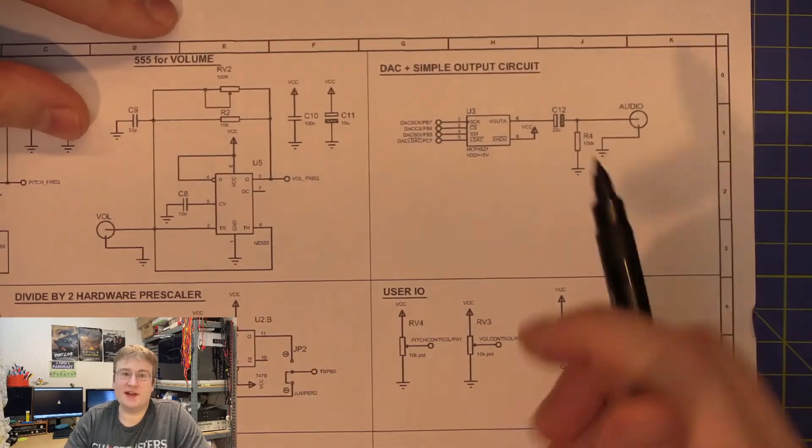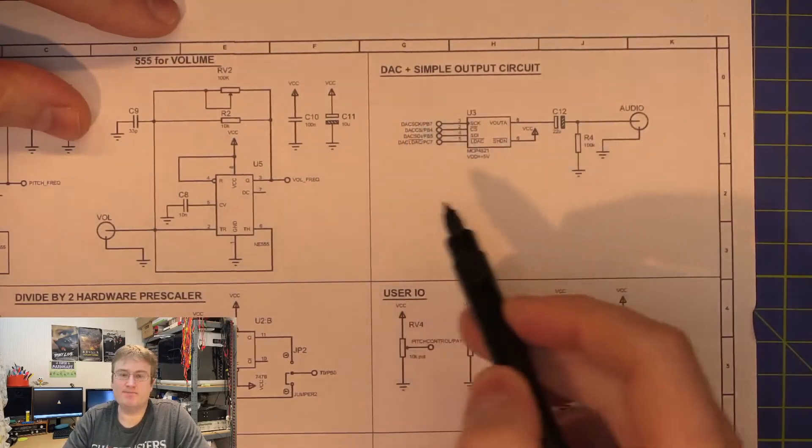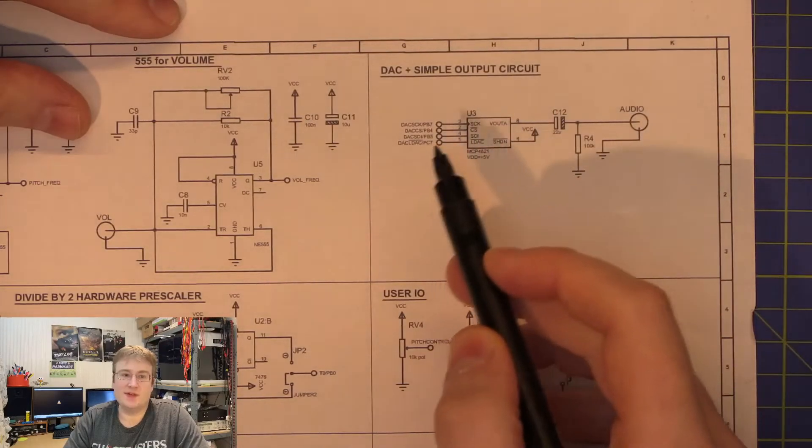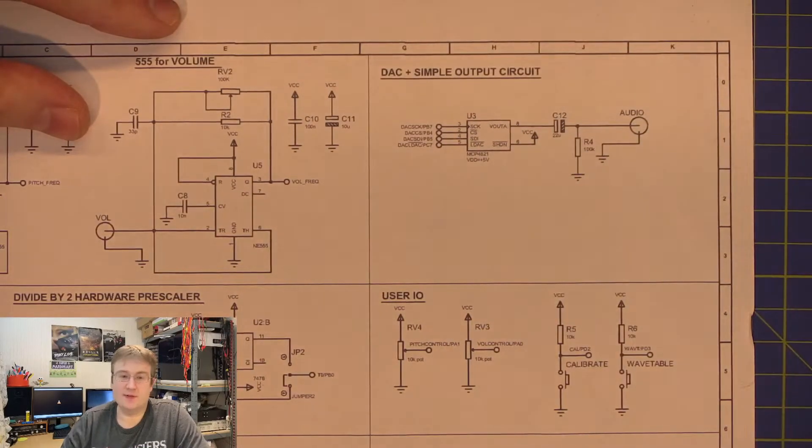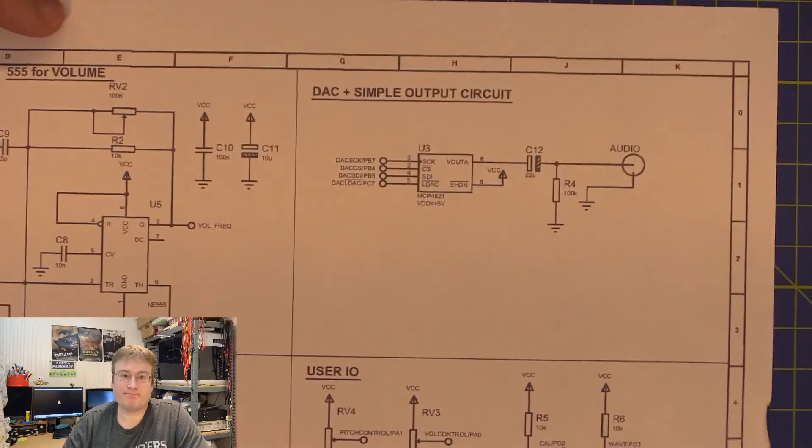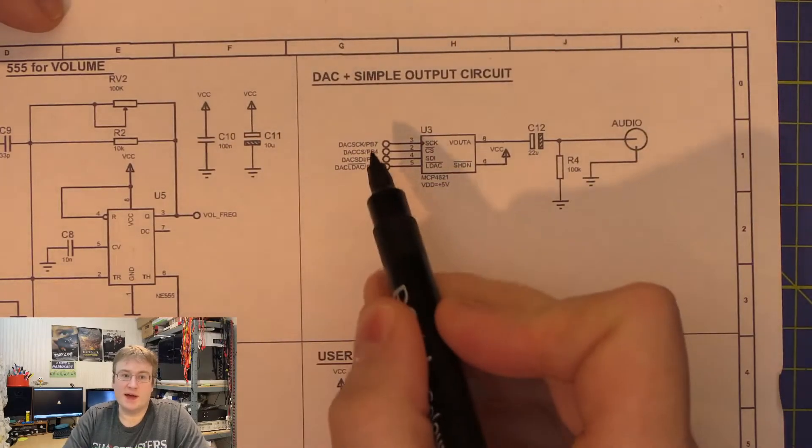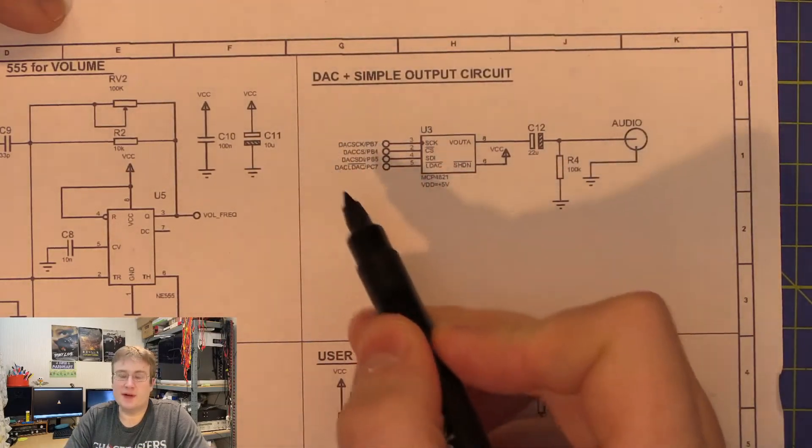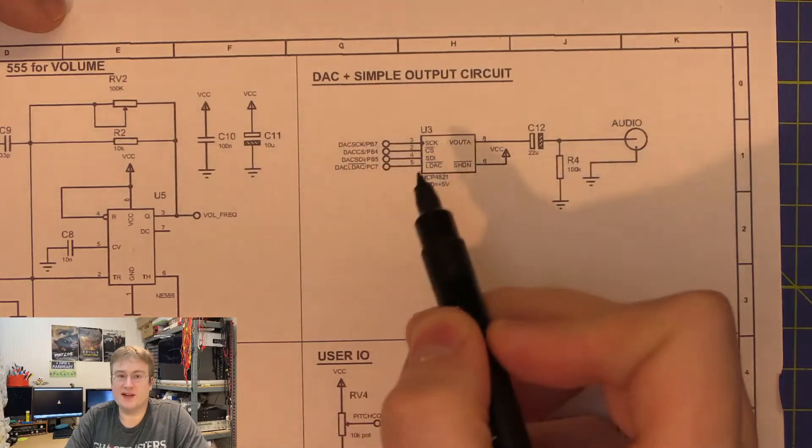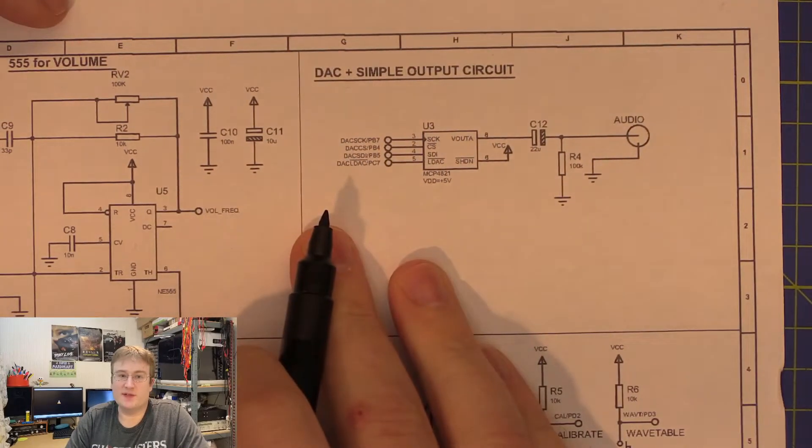Here is the DAC circuit. It's incredibly simple, you can see we just have an MCP4821 DAC, and the various SPI control and clock and data lines which go over to the microcontroller.